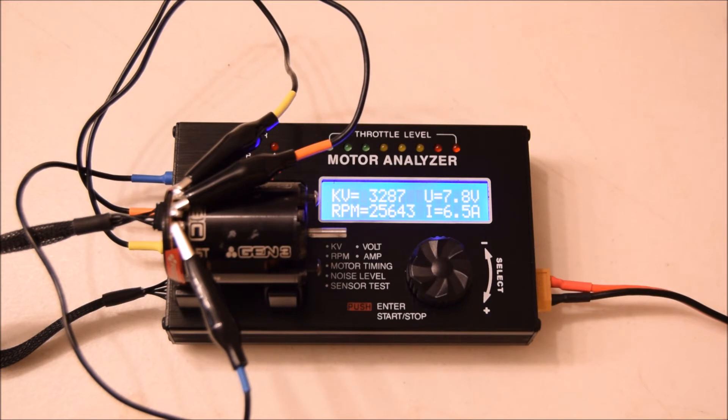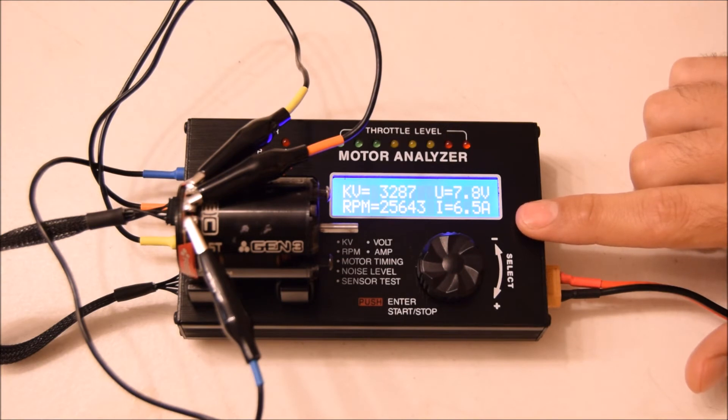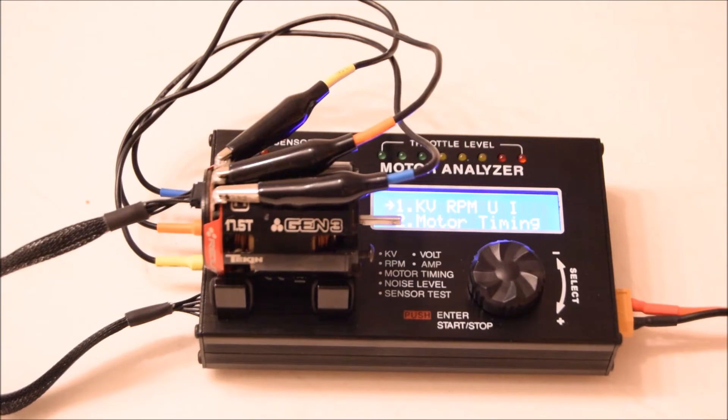It's pulling 6.5 amps. Just to warn you, 6.5 amps is a lot. This motor is currently tuned for five-minute runs with a fan on it. Generally, you should be somewhere between 5 and 6 amps for a 17.5 turn motor.